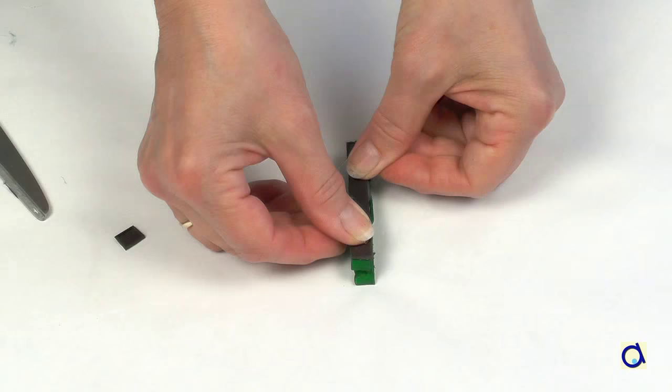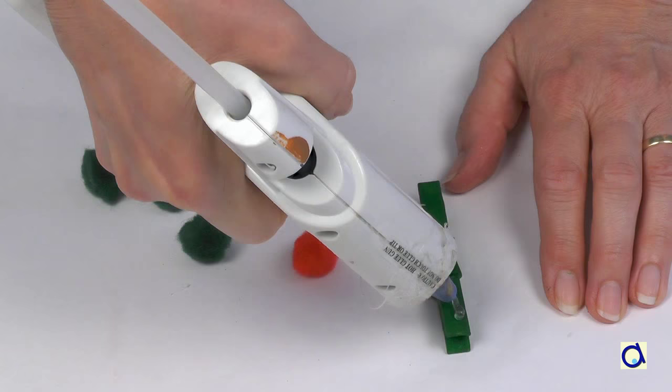Turn the clothespin around and glue a series of pom-poms on it. I chose a red pom-pom for the head and green pom-poms for the body.